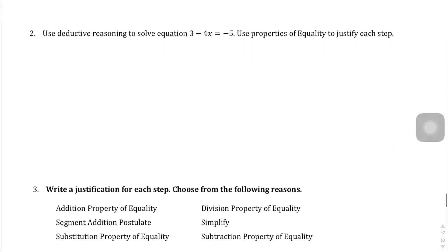Use deductive reasoning to solve the equation 3 minus 4x equals negative 5. So let's start from here. 3 minus 4x equals negative 5. There's multiple ways you can do this, but I'm going to subtract 3 from both sides.